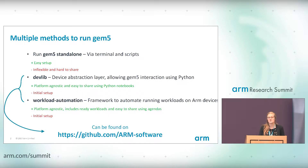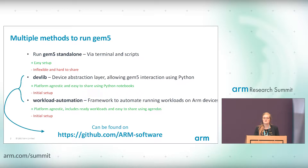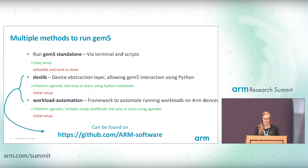Then you have DevLib. DevLib is a device abstraction layer which allows you to interact with GEM5 using Python. It allows you to set up GEM5 in Python and then interact with it via Python. The advantage is that it's platform agnostic — you interact with GEM5 the same way you would with a normal Linux device. And because you can use Python, you can create Python notebooks that you can share with people. The disadvantage is that you require some extra setup steps to get DevLib to work.